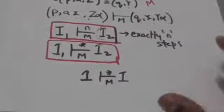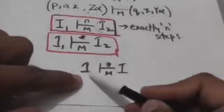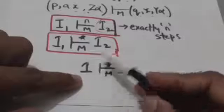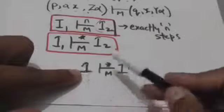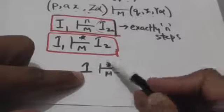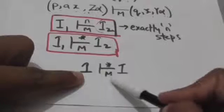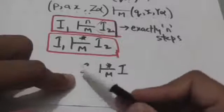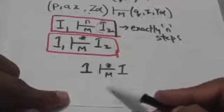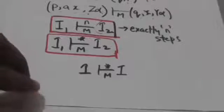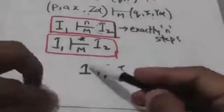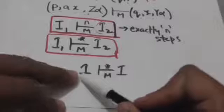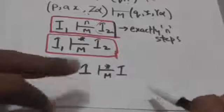All instantaneous descriptions of pushdown automata M can be related with itself by this star symbol, because it will reach the same configuration from itself in zero number of steps. In zero steps it will remain at the configuration it is presently in. So all instantaneous descriptions can be related with themselves by this symbol. Thank you very much.